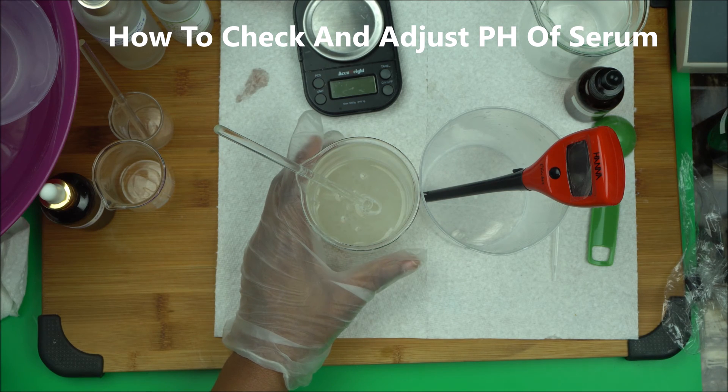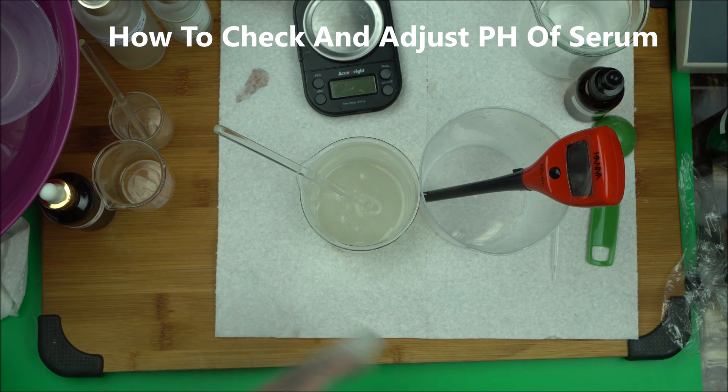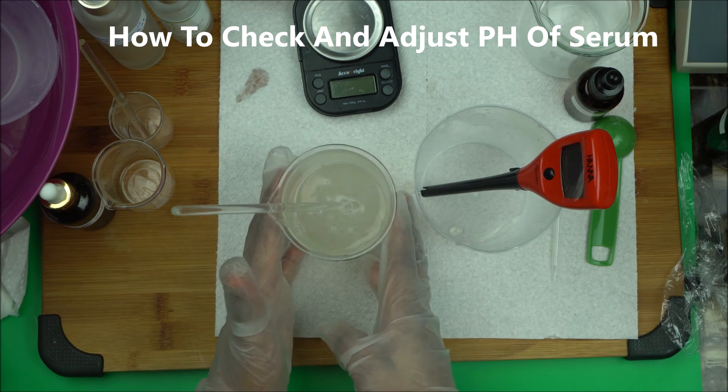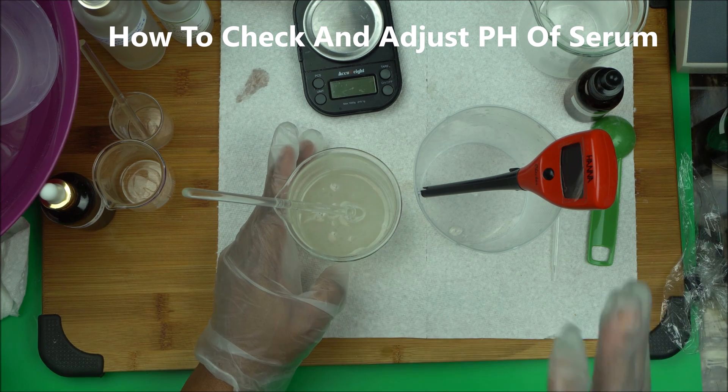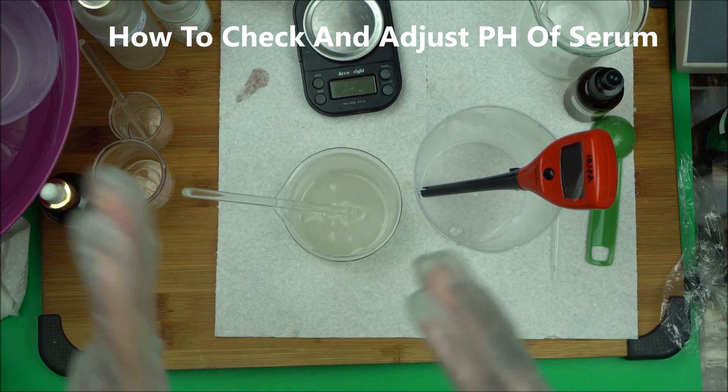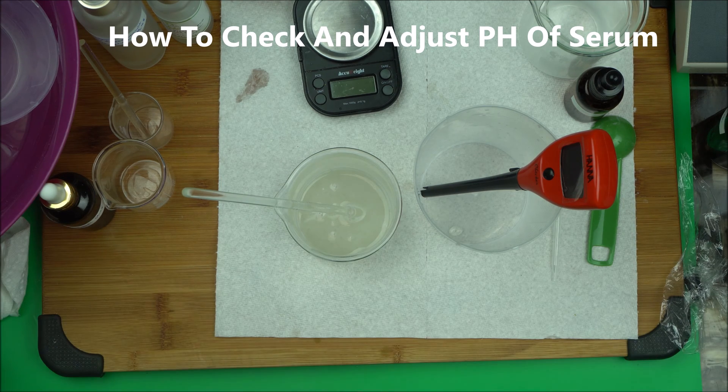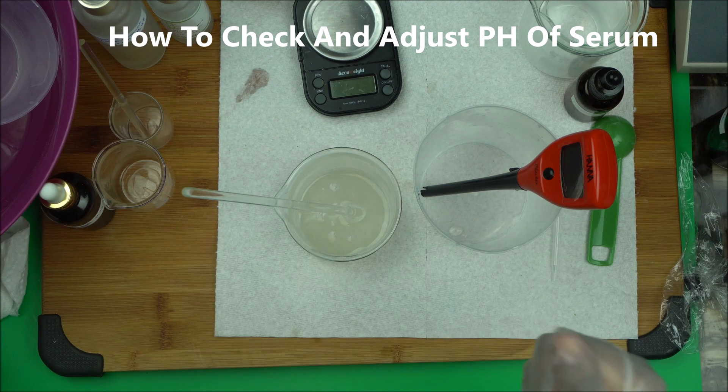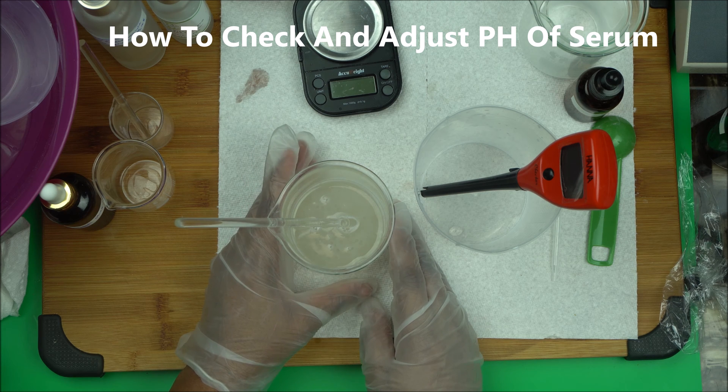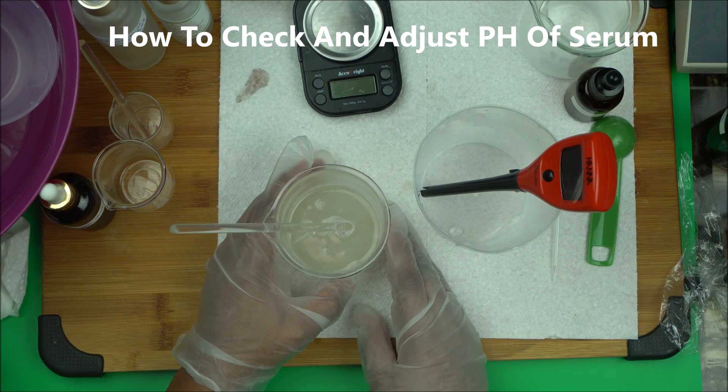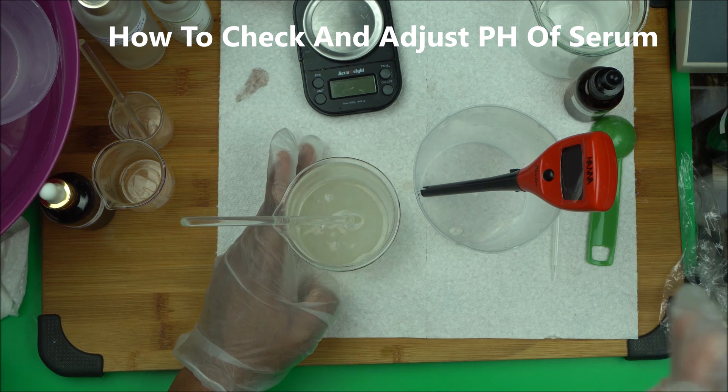Hello everyone, welcome to the channel. In this video, I want to show you how to adjust the pH of your serum. I will check the pH of this serum, then I will adjust it to the proper pH. You have to keep in mind that different serums will have different pH based on the property of the actives you use. For instance, now I am adjusting the pH of Niacinamide serum. Niacinamide optimum pH for it to work properly is 6.0.